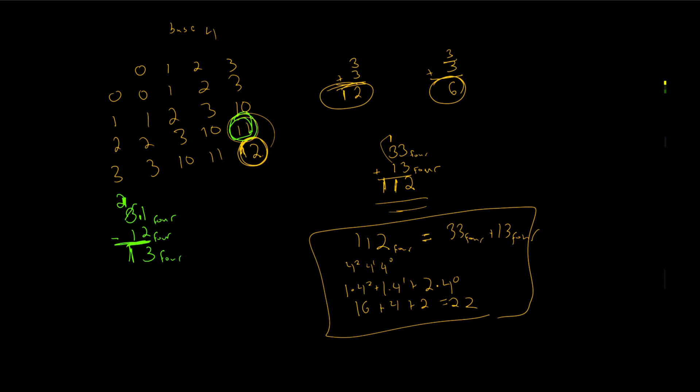What are these numbers in base ten? We have a one in the ones place and a three in the fours place, so that's twelve plus one — thirteen — minus a two in the ones place and a one in the fours place, which is six, giving seven. And our answer one-three in base four is three in the ones place and one in the fours place, which is also seven. These base systems work — position holds the value.